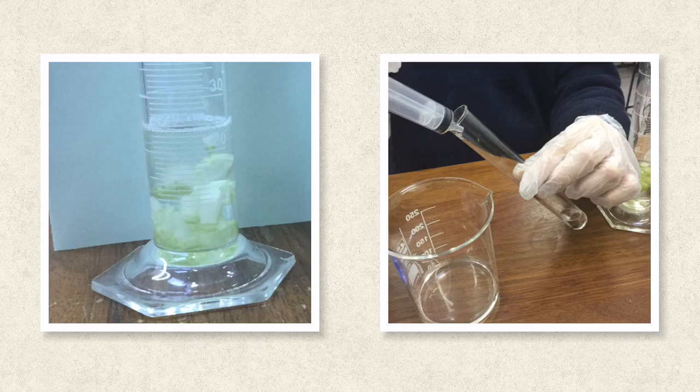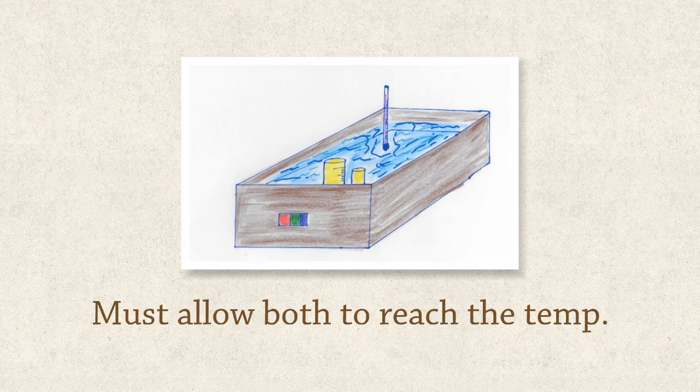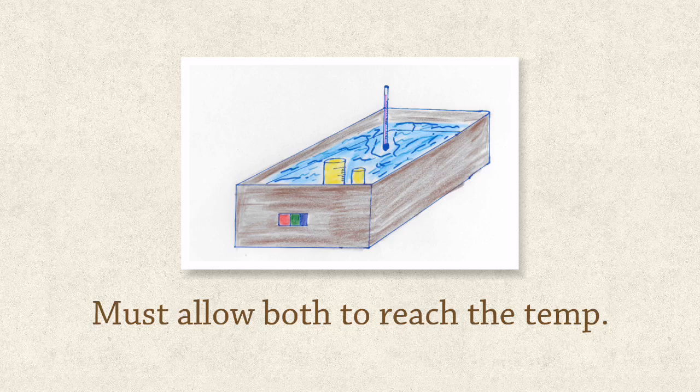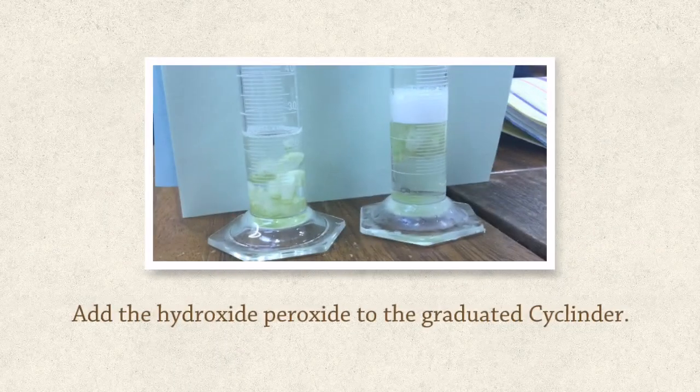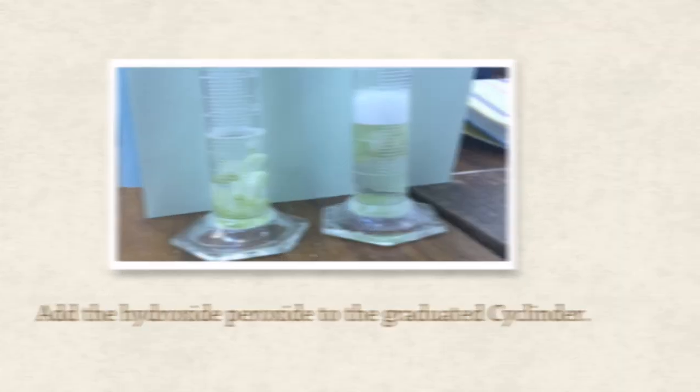Here we are all ready to go. We have our graduated cylinder and we have our substrate in the test tube. Before mixing, always ensure that you have placed the graduated cylinder and the test tube with the hydrogen peroxide into the water bath and let them sit for a few moments just so that they both come to that temperature. When you're happy or satisfied that both have reached the desired temperature, then you can add the hydrogen peroxide to the graduated cylinder.